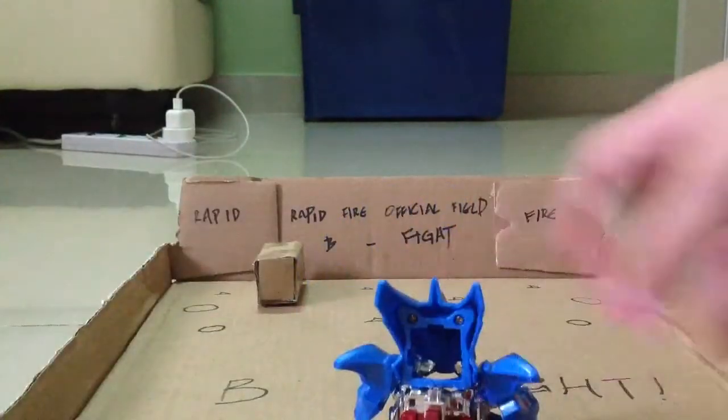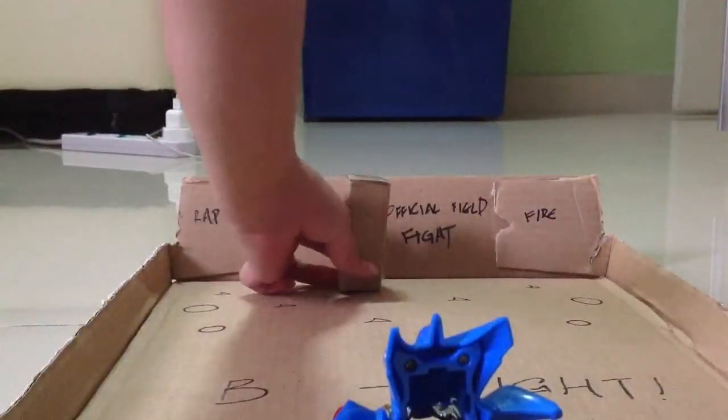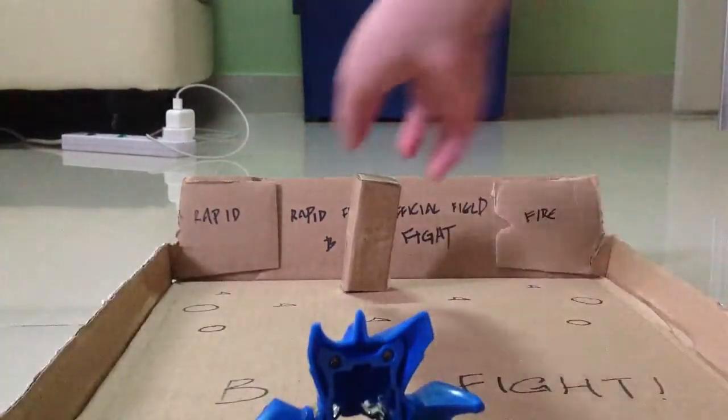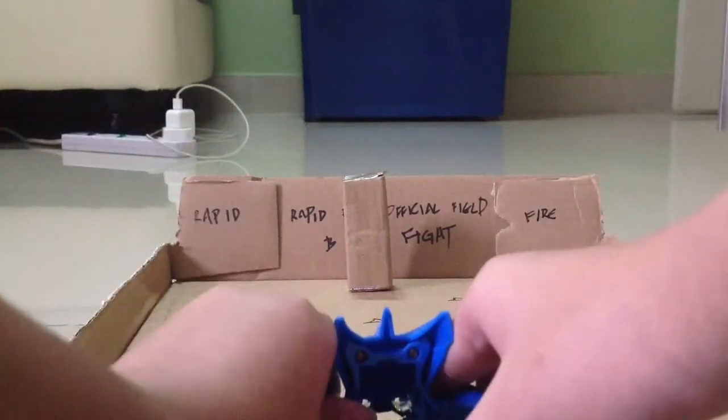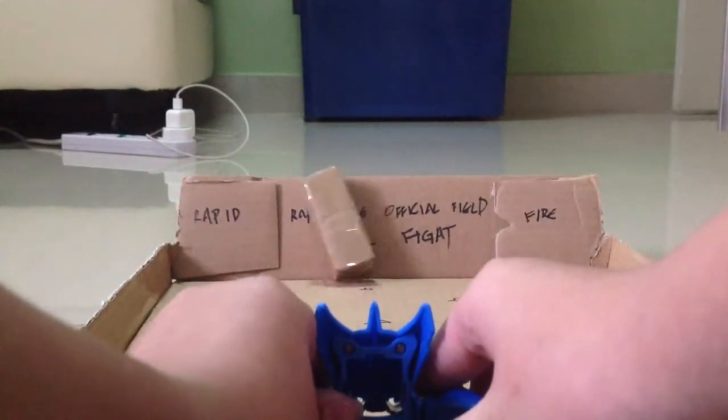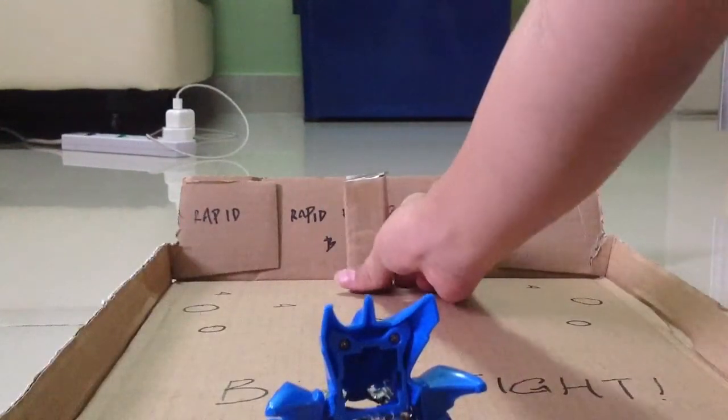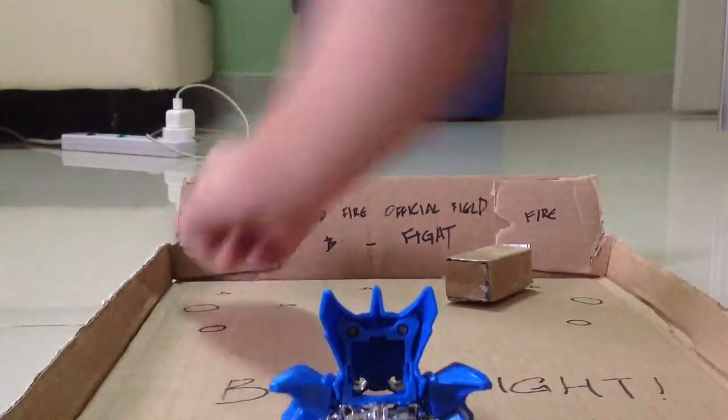So now we'll show you how accurate is this guy without the stabilizer and with the stabilizer attached. So let's just put this properly. Okay, so let's just fire this guy. It hit the side, but it still counted as not, it never knocks it down. Now it knocks it down with a second shot.